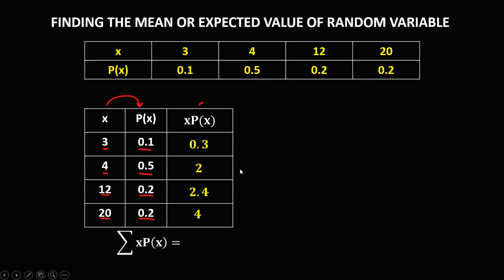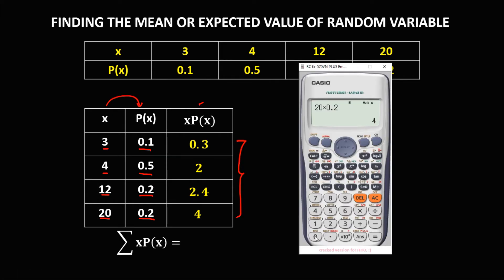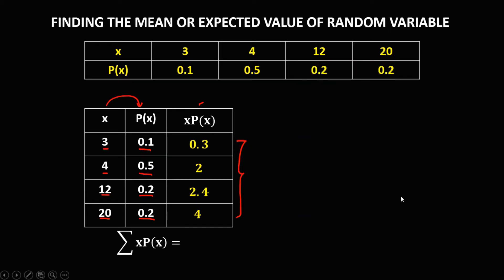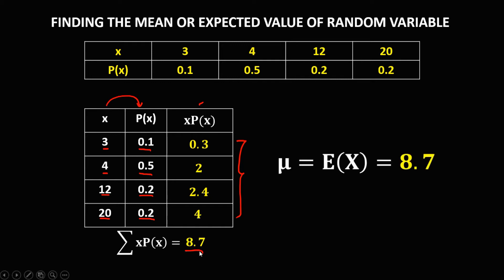Then to find the summation of x times p(x), we just need to add all these numbers. So we have 0.3 plus 2 plus 2.4 plus 4 equals 8.7. So therefore, the mean or the expected value is 8.7.